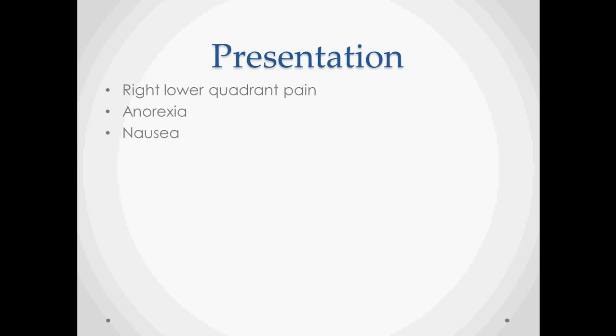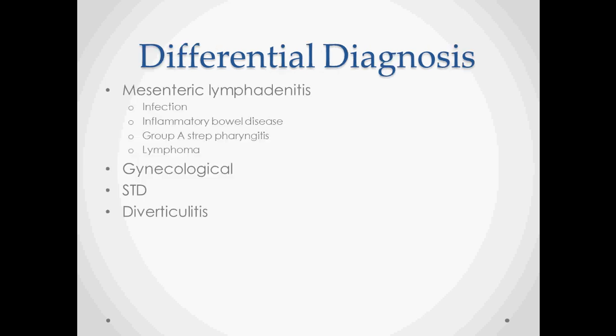Usually it presents with right lower quadrant pain, and that's a pretty good description. A lot of these different diseases that we talk about have classic symptoms and then symptoms that really happen. But with appendicitis, right lower quadrant pain is a real common presentation, as well as anorexia — these people don't want to eat — and nausea, which is probably the cause of their anorexia.